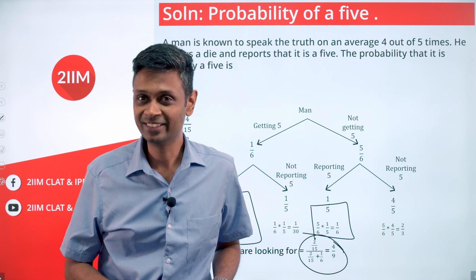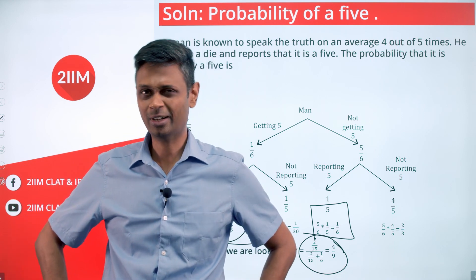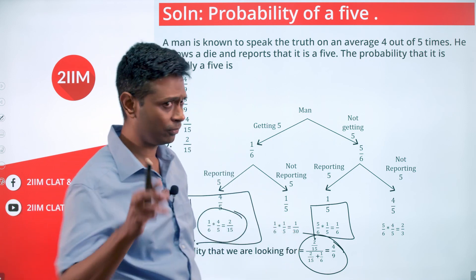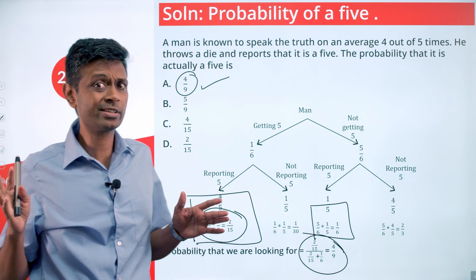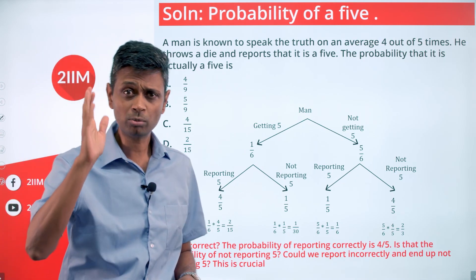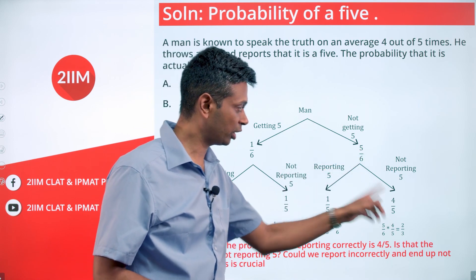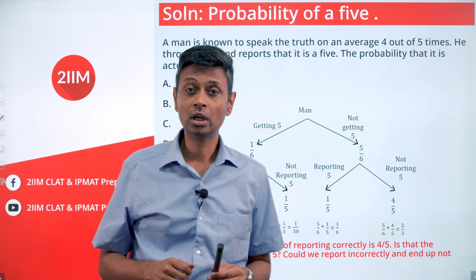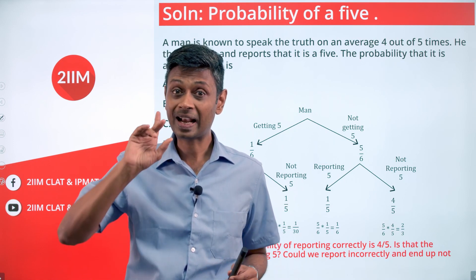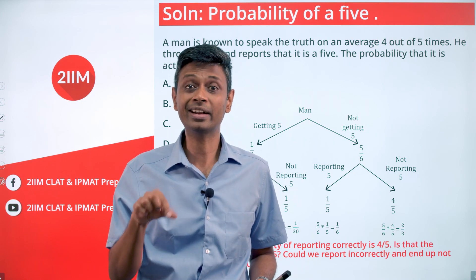This question is beautiful, but we have missed one big chunk. The answer 4/9 is available in the answer choices but it is not right. What are we missing? We have structured it as: getting a five or not getting a five, then reporting five or not reporting five. When not getting a five, reporting correctly has probability 4/5 and reporting incorrectly has probability 1/5. But reporting the correct one is not the same as not reporting five, and reporting the wrong one does not necessarily mean reporting five.